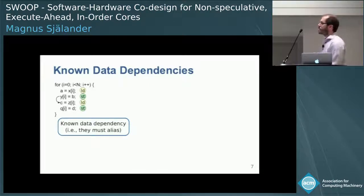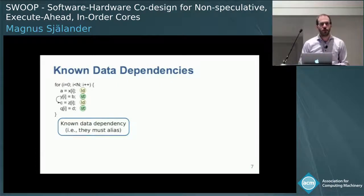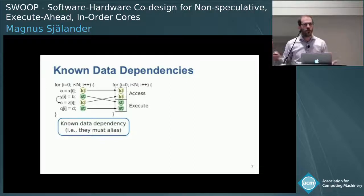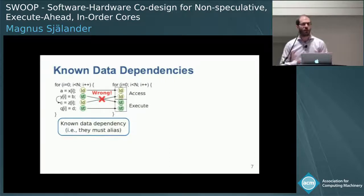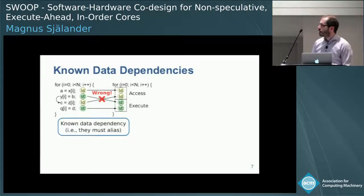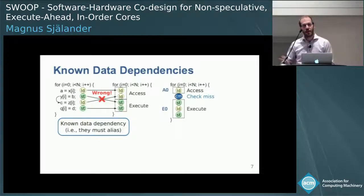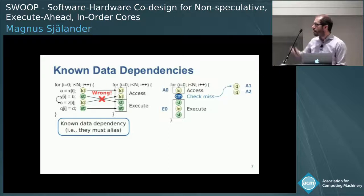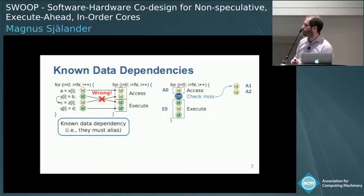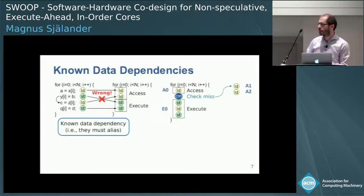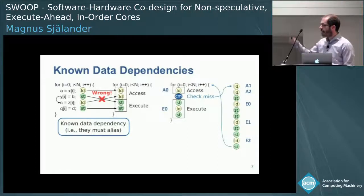If we have known data dependencies — say a data dependency between the first store and the second load — then doing the same reordering for the access and execute phase would give the wrong functional result. Instead, we need to have a smaller access phase and keep that load in the execute phase. When unrolling the alternative path, A1 and A2 would have only two instructions. In the real case, we would probably unroll this to have more access phases depending on how large the access phase is and the available hardware resources.